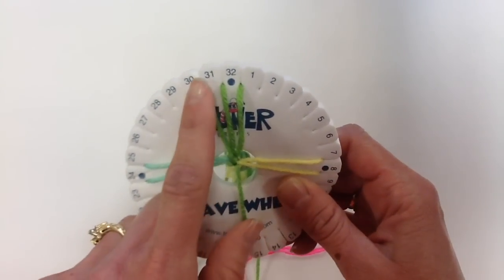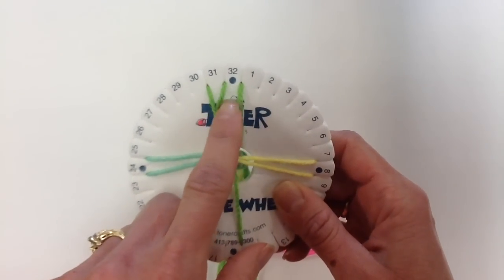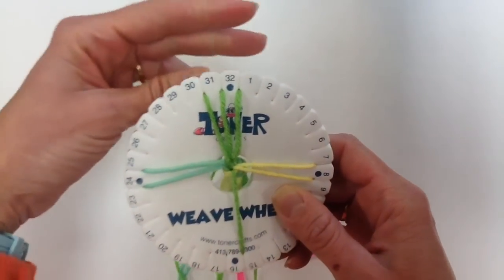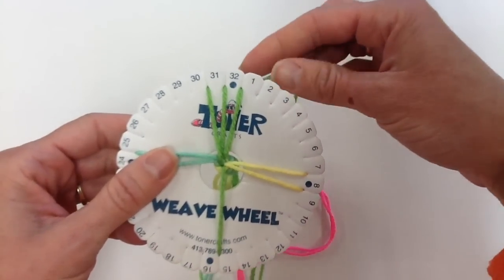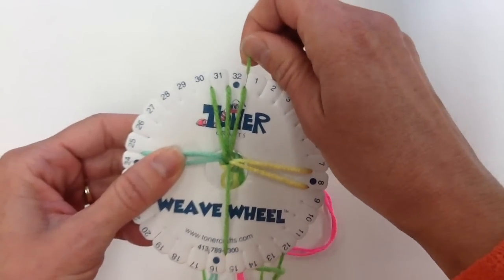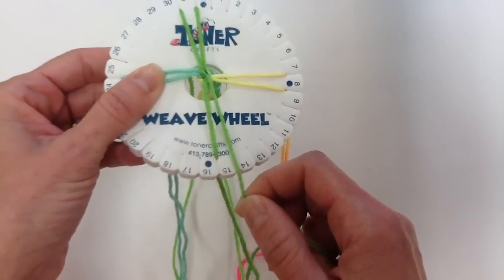Now I'm going to take one from the three, starting on my right. Take the outside one and I'm going to go straight across again, between the 15 and the 14.